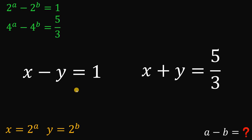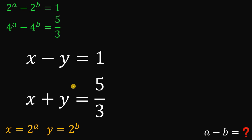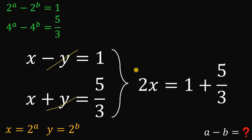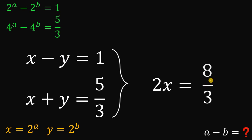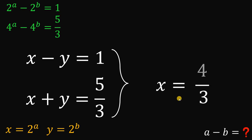The first equation is x minus y equals 1. Using those two equations, we can now find the value of x and y. If we add the two equations, we eliminate the variable y, giving us 2x equals 1 plus 5 over 3. We can replace 1 with 3 over 3. Since we have the same denominator, 3 over 3 plus 5 over 3 gives us 8 over 3. Dividing both sides by 2, x equals 4 over 3.